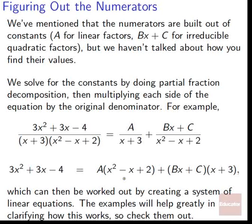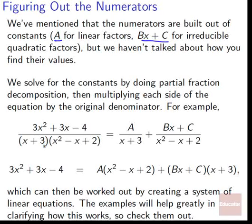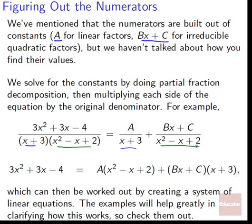Now, how do we figure out what those numerators are? We solve for the constants by multiplying each side of the equation by the original denominator. For example, if we have (3x²+3x−4) over (x+3)(x²−x+2), it breaks into A over (x+3) plus (Bx+C) over (x²−x+2). We multiply both sides by (x+3)(x²−x+2). The denominators cancel, leaving 3x²+3x−4 = A(x²−x+2) + (Bx+C)(x+3).